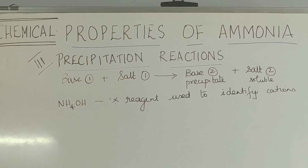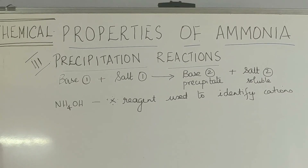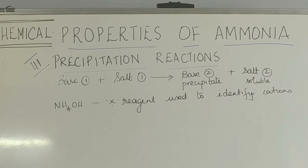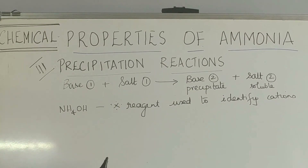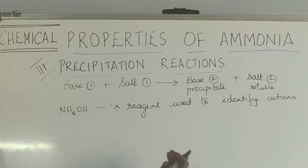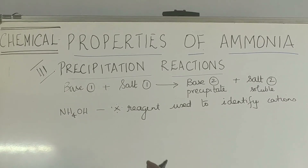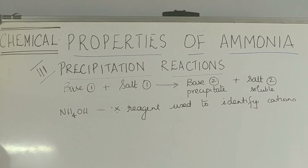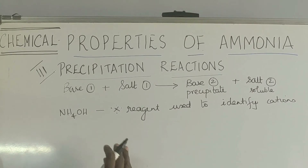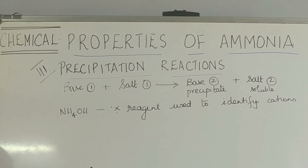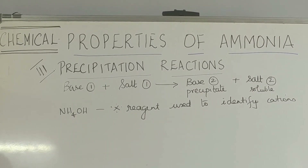Ammonium hydroxide is an important reagent used to identify various cations by the colour of the precipitates. We are learning about the colour of the precipitates — when normal and when excess ammonium hydroxide is added, and what happens to solubility.